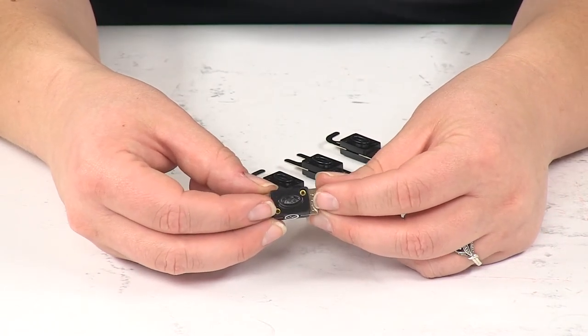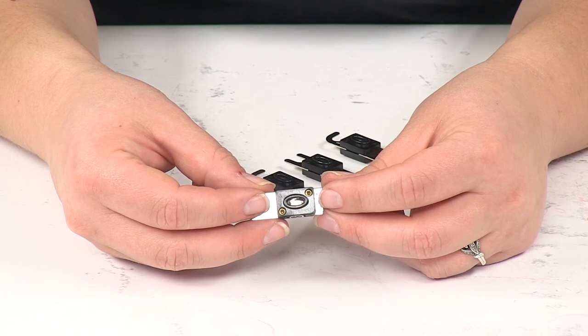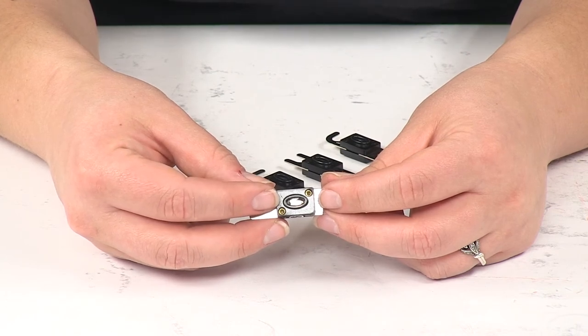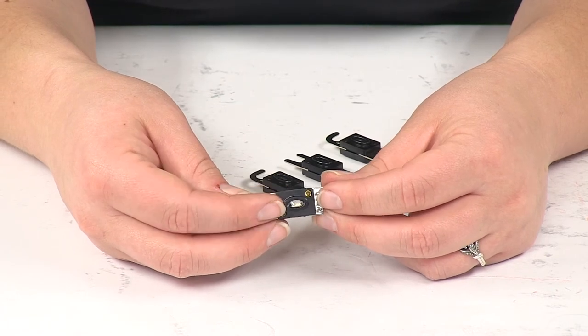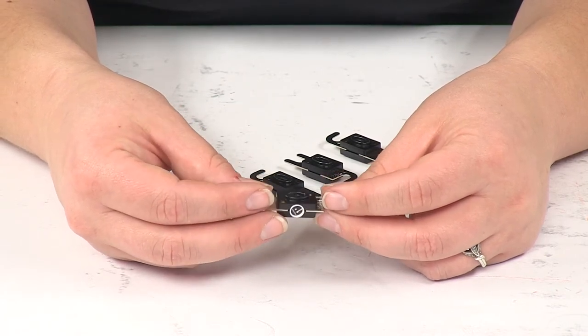That little window in the center there is going to allow you to detect whether or not the connection blade has separated. It gives you an easy visible indicator of whether or not this fuse needs to be replaced.